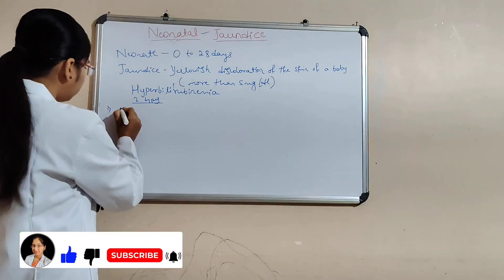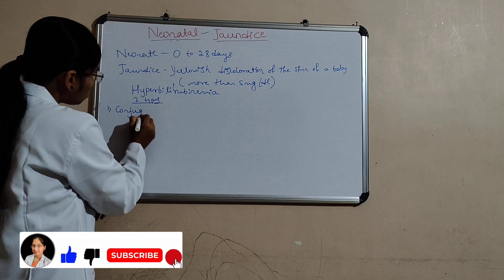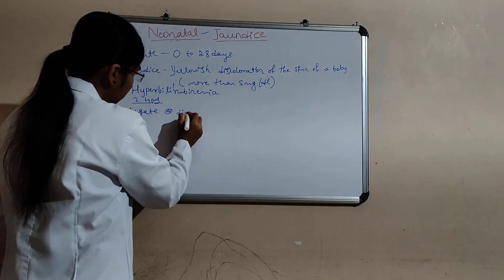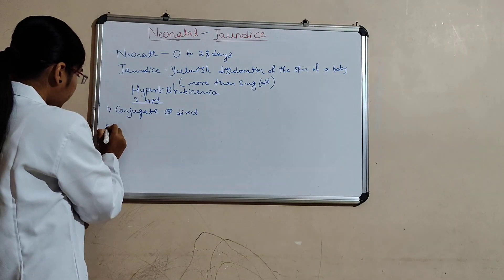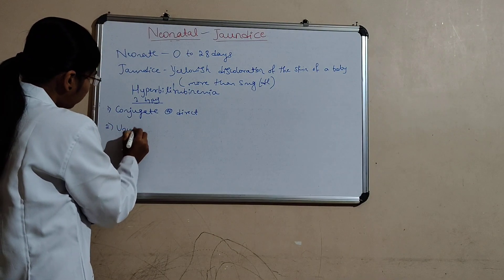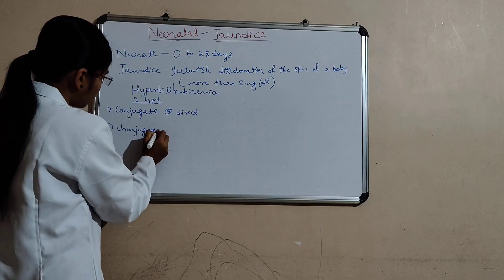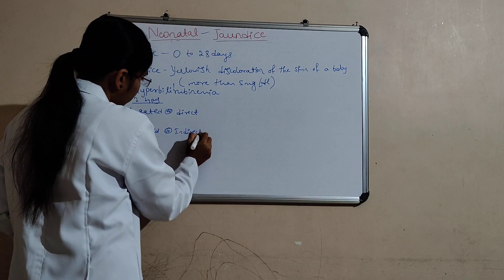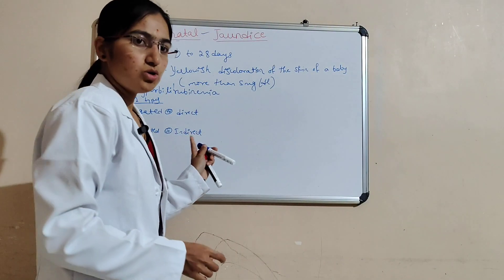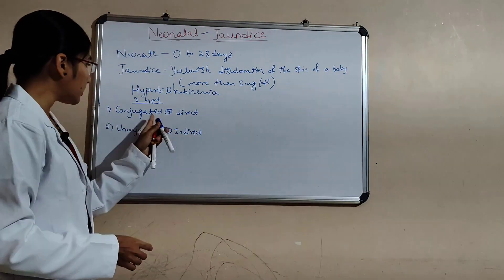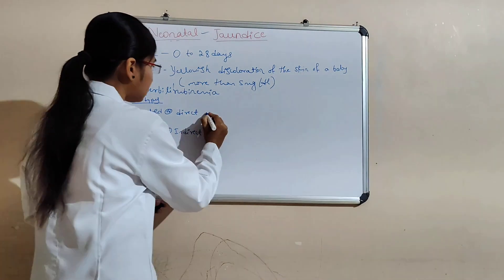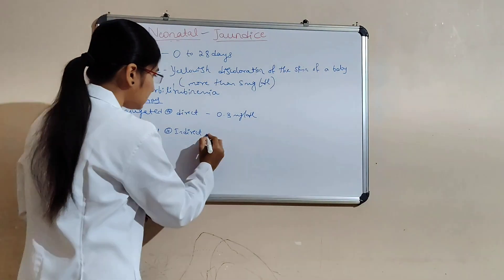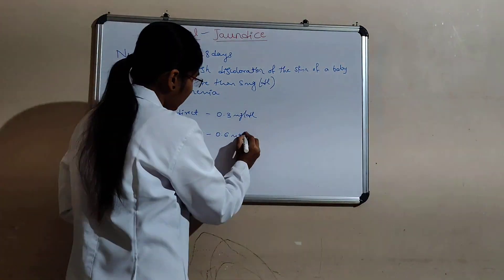The first type is conjugated, also called direct bilirubin. The other one is unconjugated, also called indirect bilirubin. Normal values: conjugated is 0.3 mg per dL and unconjugated is 0.6 mg per dL.